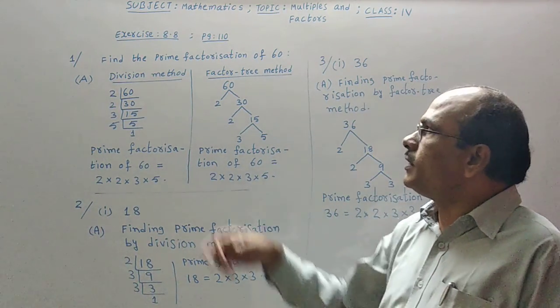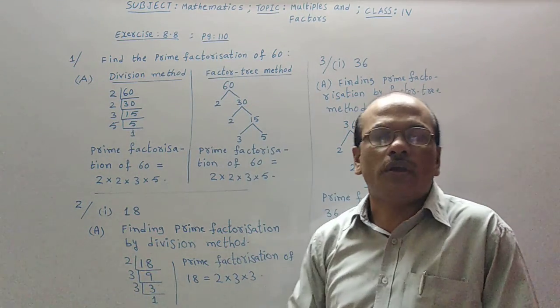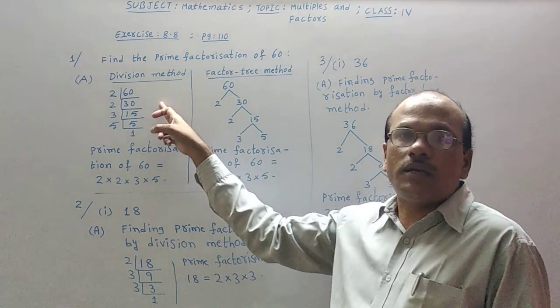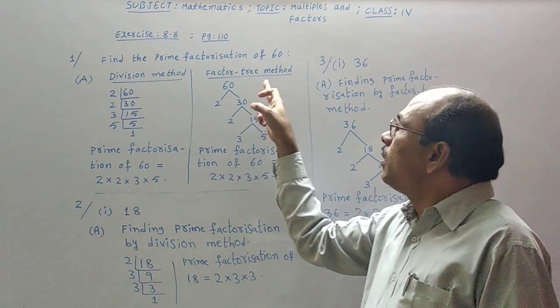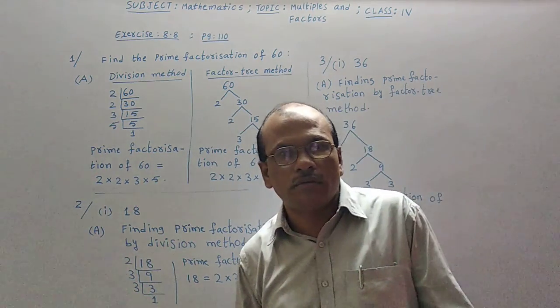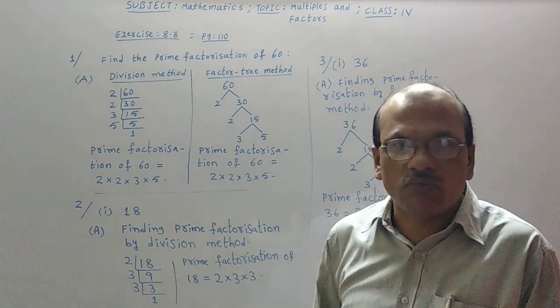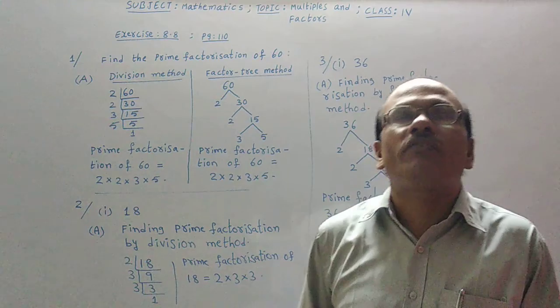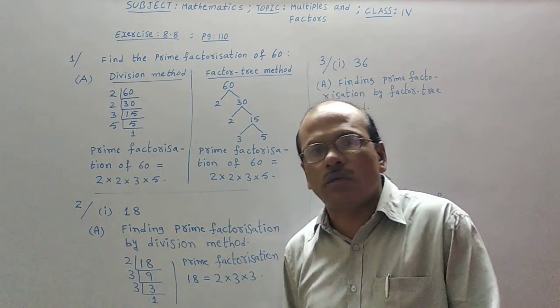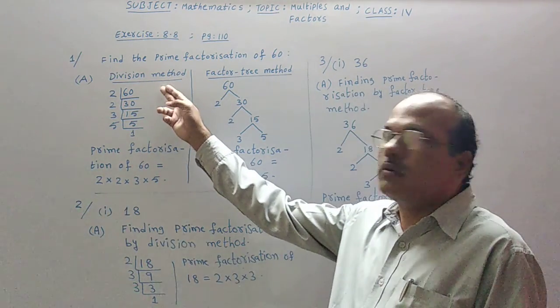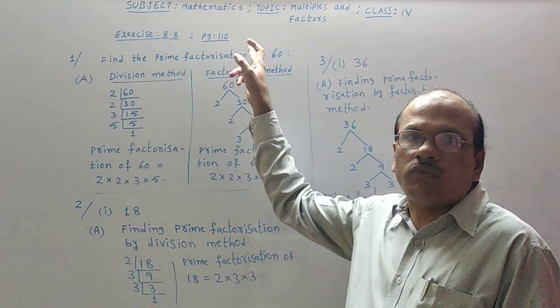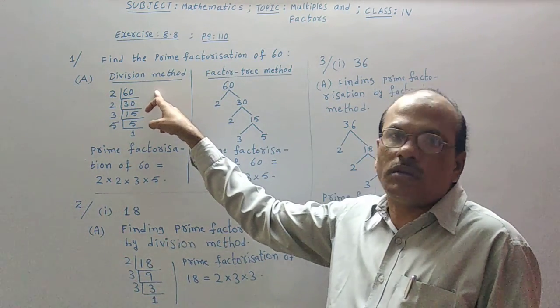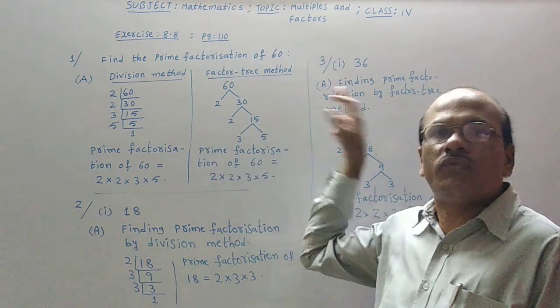They are asking us to find prime factorization of 60 using division method and factor tree method. We need to find prime factorization by division method as well as factor tree method. Let us see how to find the prime factorization for the given number 60 by using division method. Later we will go for factor tree method.